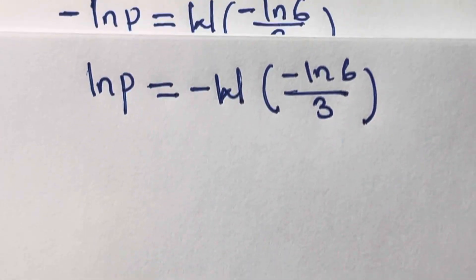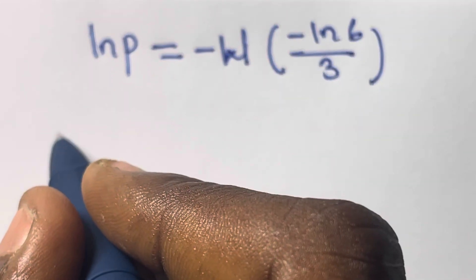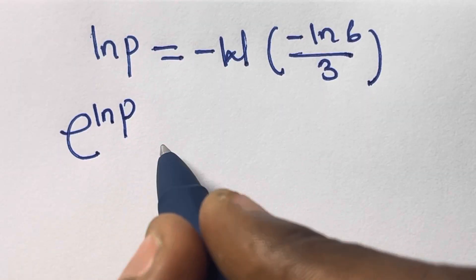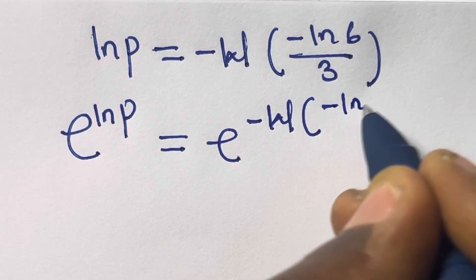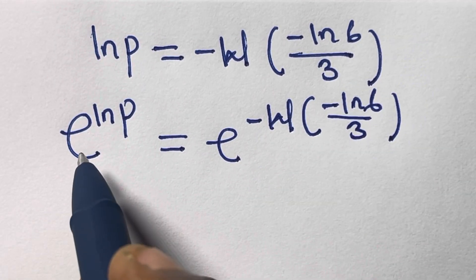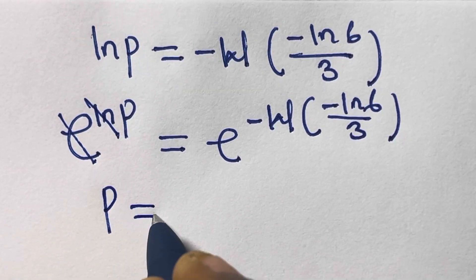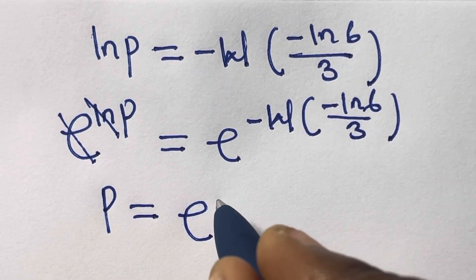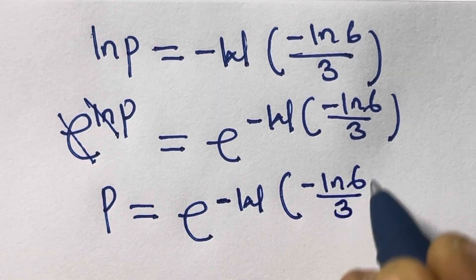Now we take the exponential of both sides. We have e^(ln(p)) equals e^(-W(minus ln(6)/3)). The exponential cancels the ln on the left, so p equals e^(-W(minus ln(6)/3)).